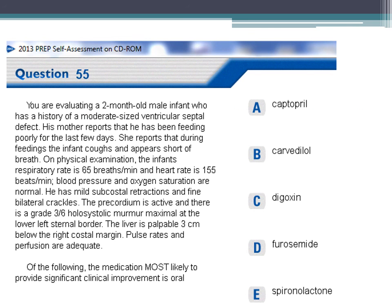PREP question 2013: a two-month-old male with a moderate-sized VSD has poor feeding, cough and shortness of breath during feedings. Exam shows respiratory rate 65, heart rate 155, mild subcostal retractions, fine bilateral crackles, active precordium, grade 3 out of 6 holosystolic murmur at the left lower sternal border, liver palpable 3 cm below the right costal margin. The medication most likely to provide significant clinical improvement is oral furosemide.